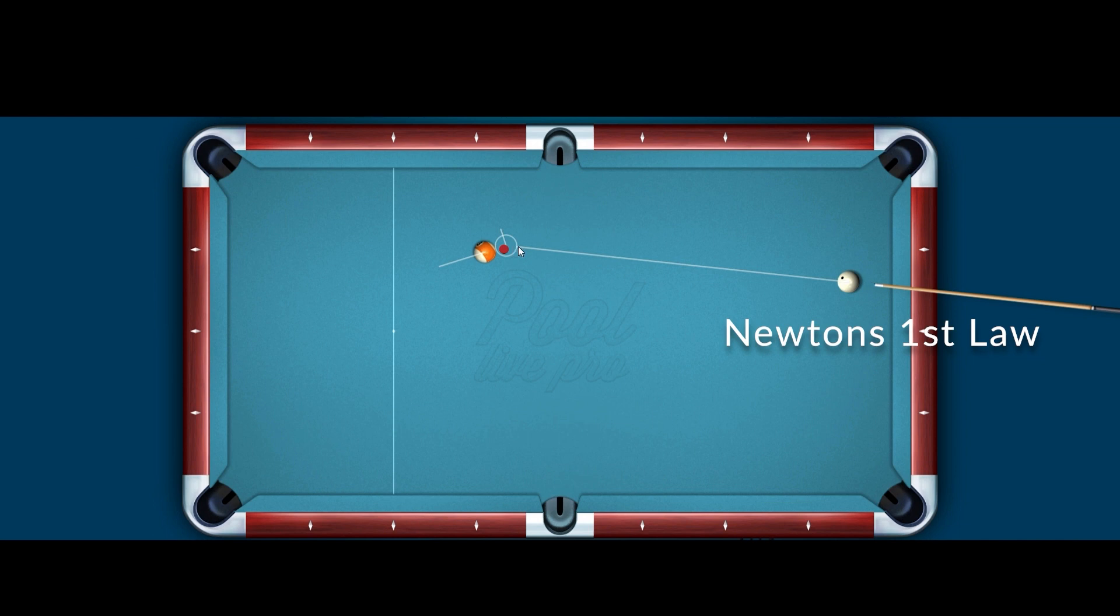To make it move in a direction we have to exert a force and push on it. Here you can see we use a snooker stick to move the ball. That's Newton's second law. And when you do that the object exerts an equal and opposite force back. That's Newton's third law.